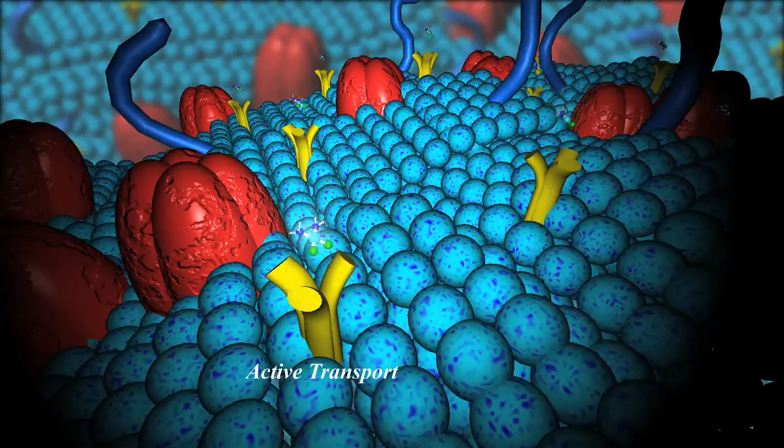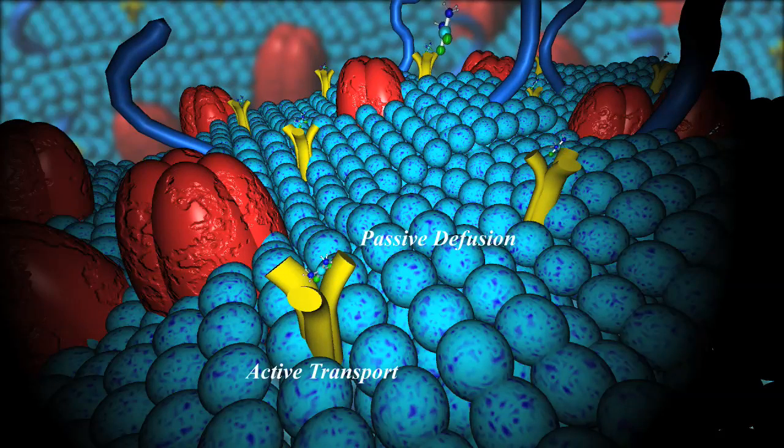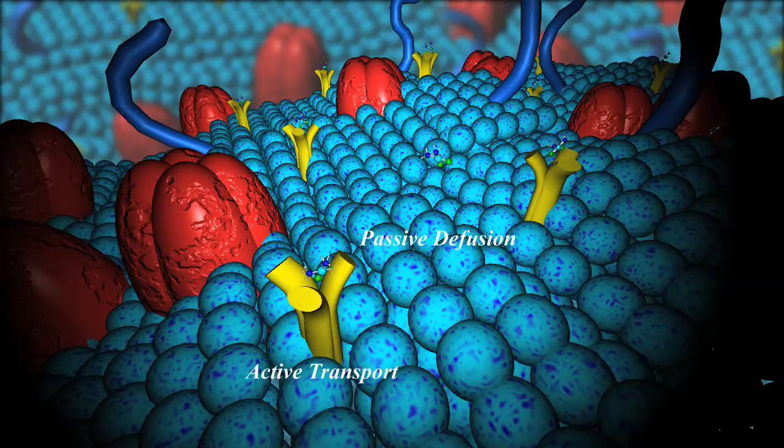Most cisplatin enters the body through active transport, but some molecules are passively diffused through the cell membrane.